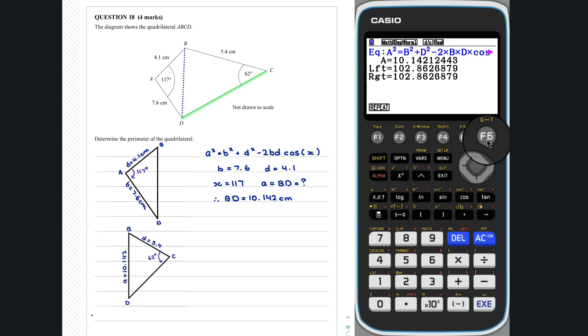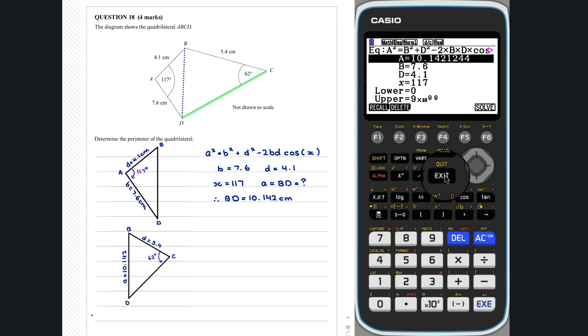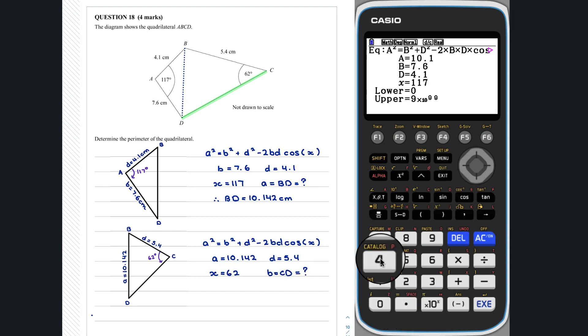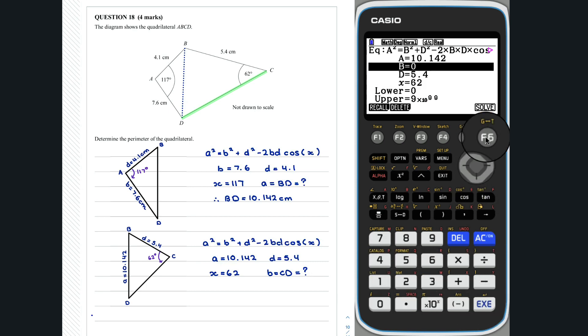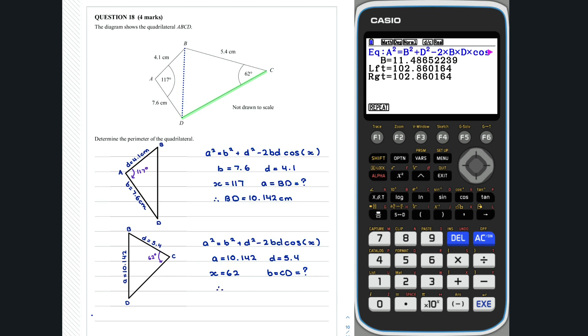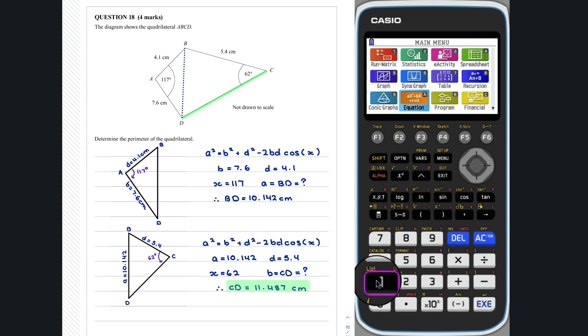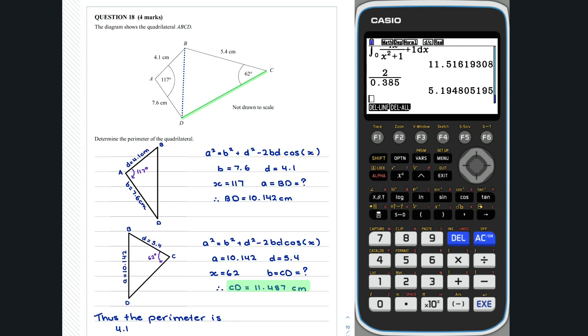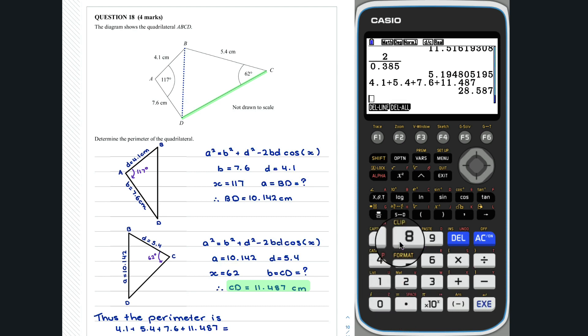Using triangle BCD, we can now solve for the length CD. Again, we can use the cosine rule and the equation app. Therefore, CD is equal to 11.487. Thus, the perimeter is 4.1 plus 5.4 plus 7.6 plus 11.487, which is equal to 28.587 centimeters.